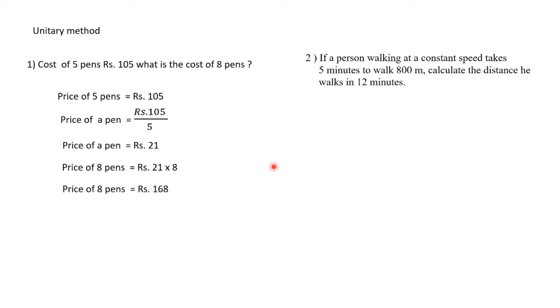If a person walking at a constant speed takes 5 minutes to walk 800 meters, calculate the distance he walks in 12 minutes. Before you solve the problem, you have to figure out what are the quantities. In this case, there are two quantities: 5 minutes (time) and 800 meters (length).